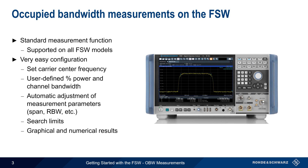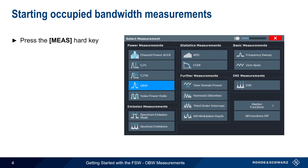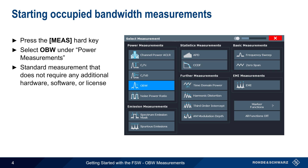In the remainder of this presentation, we'll go step-by-step through the occupied bandwidth measurement process. To make an occupied bandwidth measurement, press the Measure hard key, and then select OBW from the list of available power measurements. Occupied bandwidth is a standard spectrum measurement and does not require any additional hardware, software, or license code.